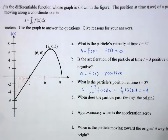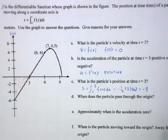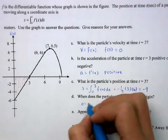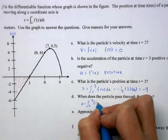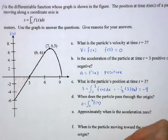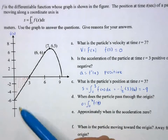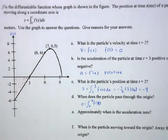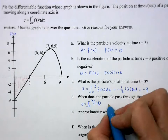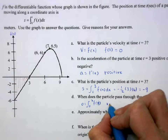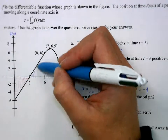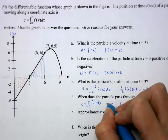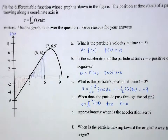When does the particle pass through the origin? That means position equals 0. The first obvious case is when x equals 0. The other case is when the negative area equals the positive area — that occurs at t equals 6, so that integral is also 0.